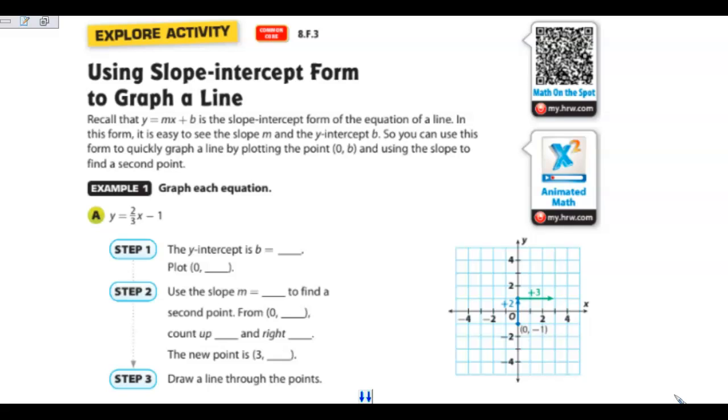In this form, it's easy to see the slope and the y-intercept because we remember that slope is the m, always in front of the x, and the y-intercept is always after the x, that's the b. So you can use this form to quickly graph a line by plotting the point at 0, b, that's your y-intercept, and using the slope to find a second point.